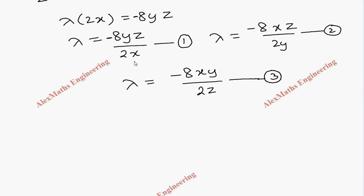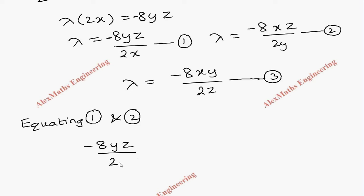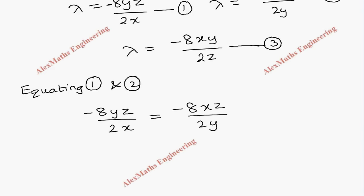Now we equate the first and second lambda expressions: −8yz/(2x) = −8xz/(2y). We can cancel −8, 2, and z from both sides. Cross-multiplying the remaining terms gives y² = x². This is our fourth equation.